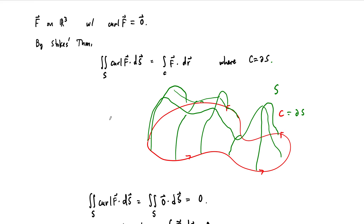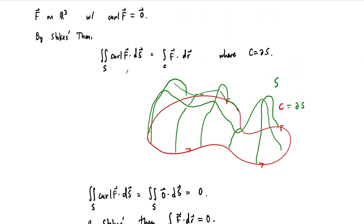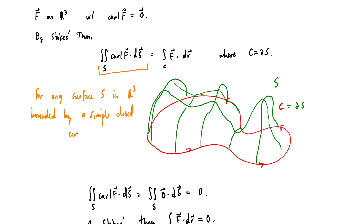So once we have all this high-powered machinery, it's pretty easy to show that if the curl of a vector field is zero, then the vector field must be conservative. To state the theorem precisely, this is true for every surface in R³, and therefore for every curve in R³. As long as the surface is bounded by a simple closed curve, the surface integral reduces to a path integral, the path integral being zero means the vector field must be conservative. So Stokes' theorem gives us a very fast way to show that if curl F is zero, then F must be conservative.